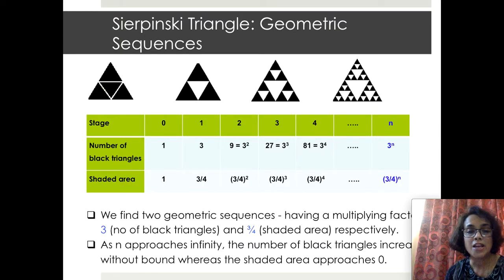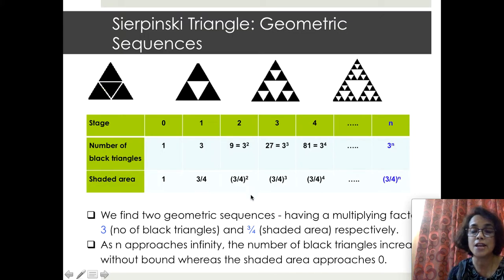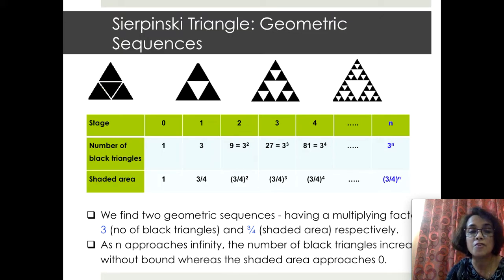We find two very interesting geometric sequences. For the number of black triangles we have the geometric sequence 1, 3, 3², 3³, and so on, with a multiplying factor of three. For the shaded area we have a geometric sequence with multiplying factor three-quarters. As n approaches infinity, the number of black triangles will approach infinity; however, the black area will actually approach zero.